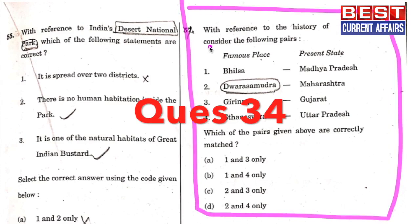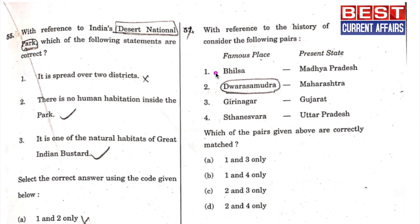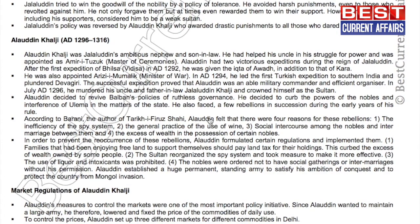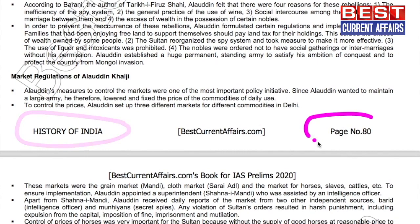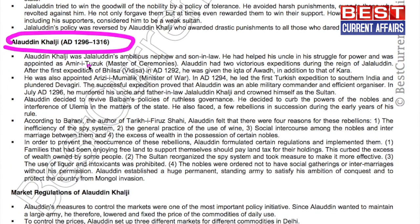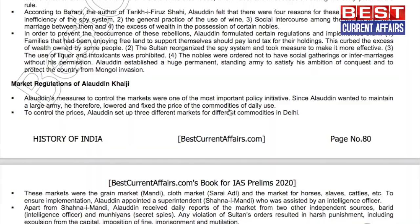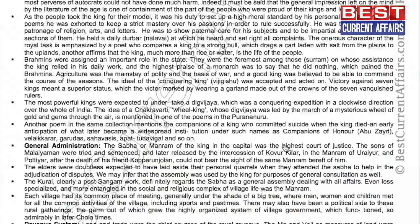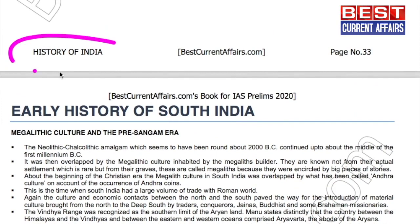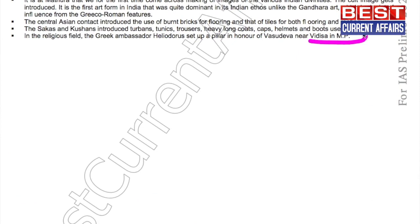With reference to the history of India — consider pairs of famous places and their states. The first pair is Bhajsa, Madhya Pradesh. From our history booklet, page 80: Bhajsa is mentioned in the context of Khilji expeditions. On page 33 of the same booklet, it is confirmed that Bhajsa is in Madhya Pradesh. Statement one is correct.